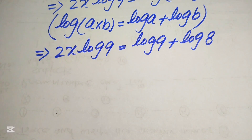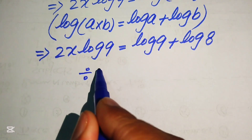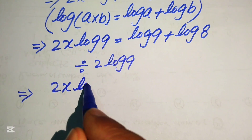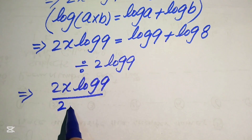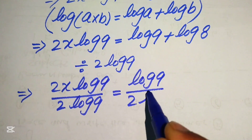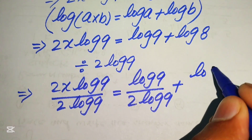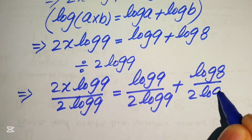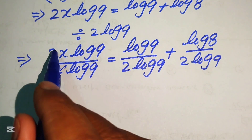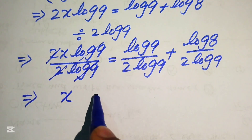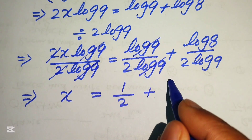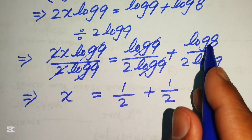To isolate x, we divide both sides by 2·log9. On the left, 2x·log9 divided by 2·log9 gives x. On the right, log9 divided by 2·log9 plus log8 divided by 2·log9. The log9 terms cancel, giving x = 1/2 plus log8 over (2·log9).